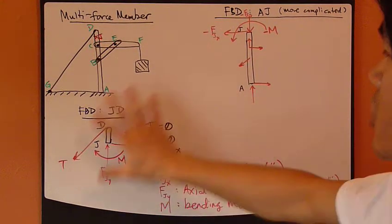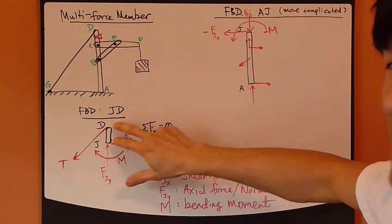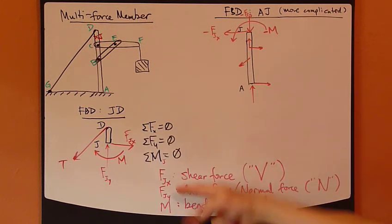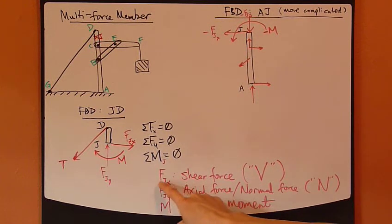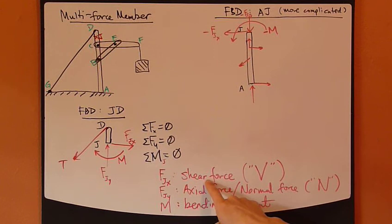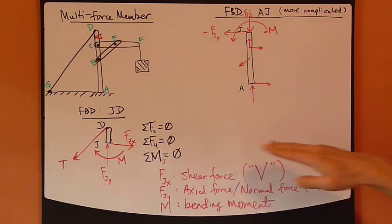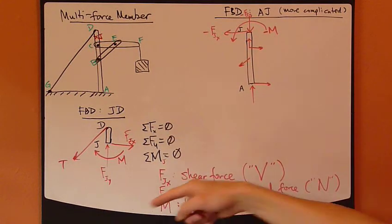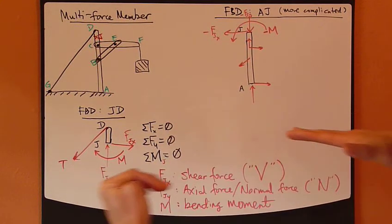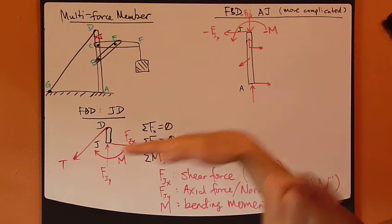So now we've finished analyzing this three-body diagram with the section JD. Again, these three internal forces have special names. This is FJX. It's called the shearing at this position.